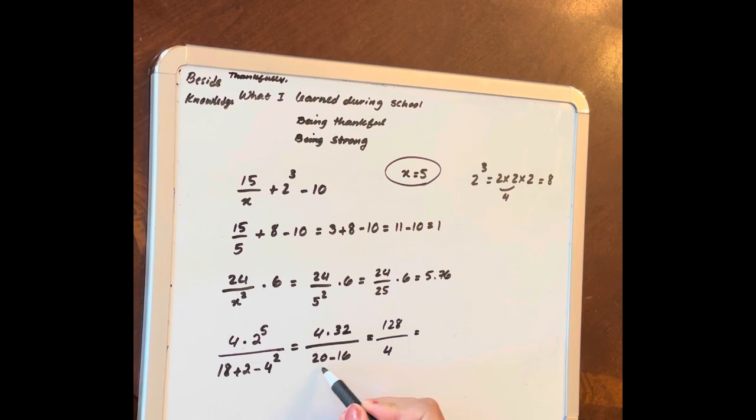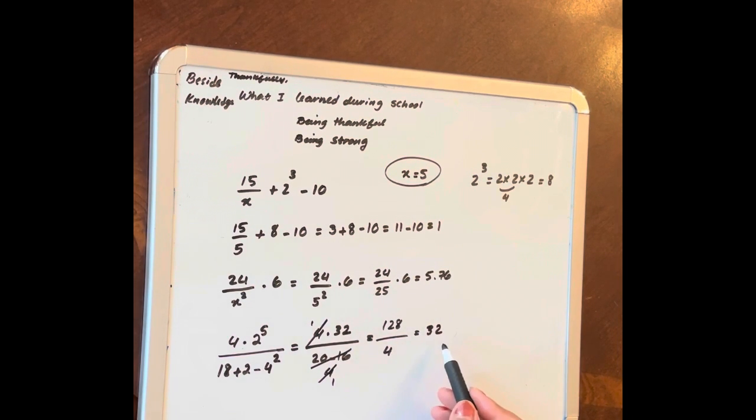Or you can say this is 4, this is 4. 4 by 4 cross out, so the answer is 32.